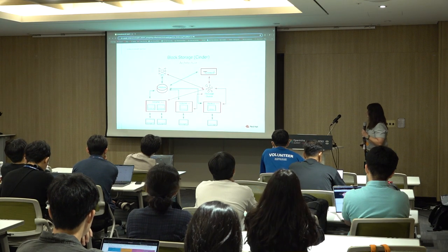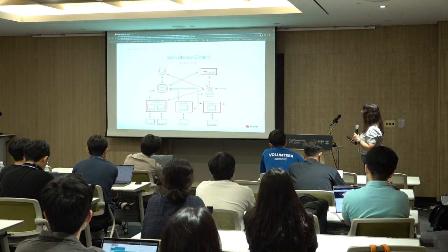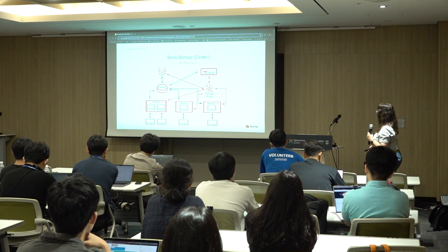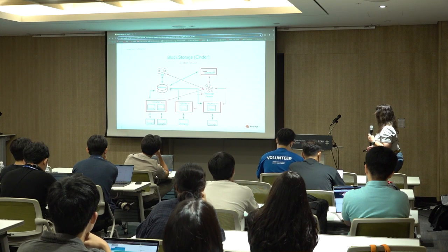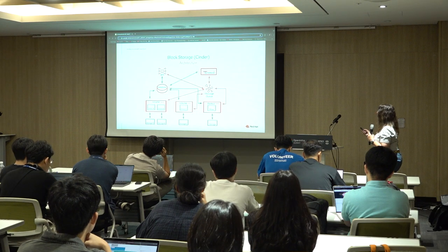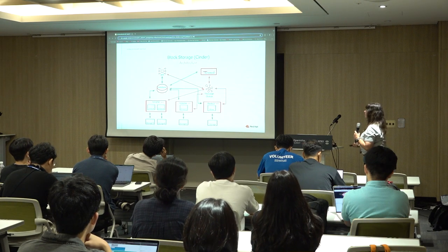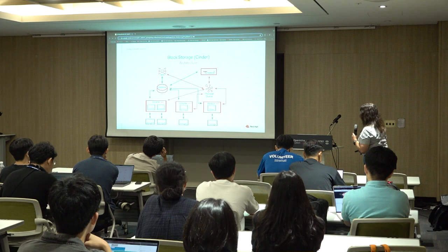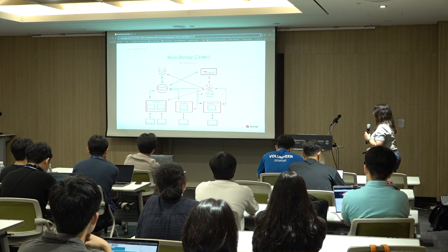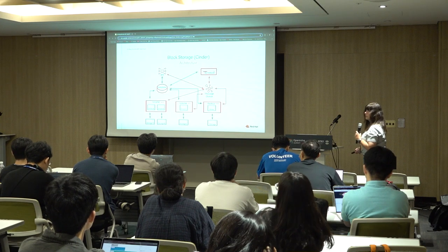Cinder is block storage. You have your API, which talks to the database. The database can talk to the scheduler. The different volumes also utilize a message queue — all the lines in red are the message queue talking back and forth, whereas the black lines come from the API. You can add multiple volumes, and within those volumes you can add multiple drivers and multiple storage backends. Then you have the backup driver with a backup storage.